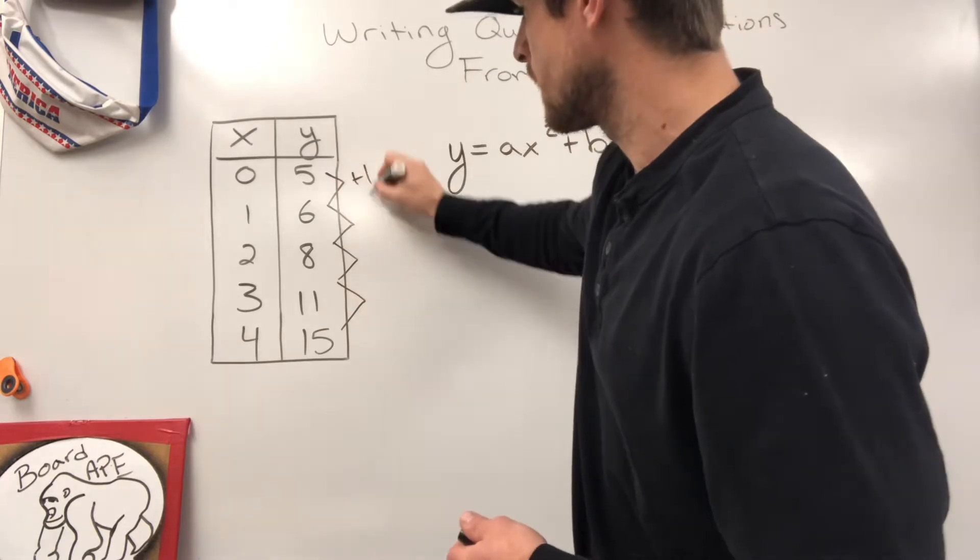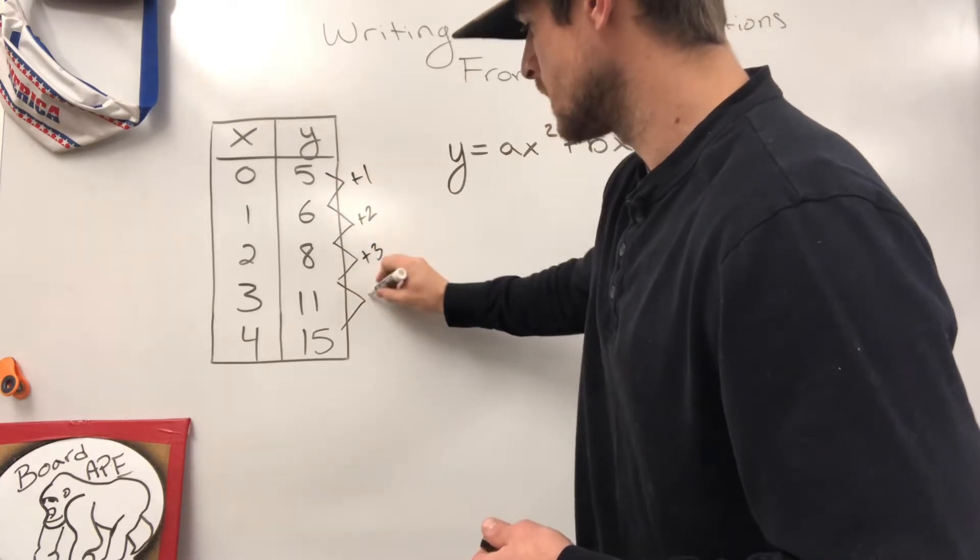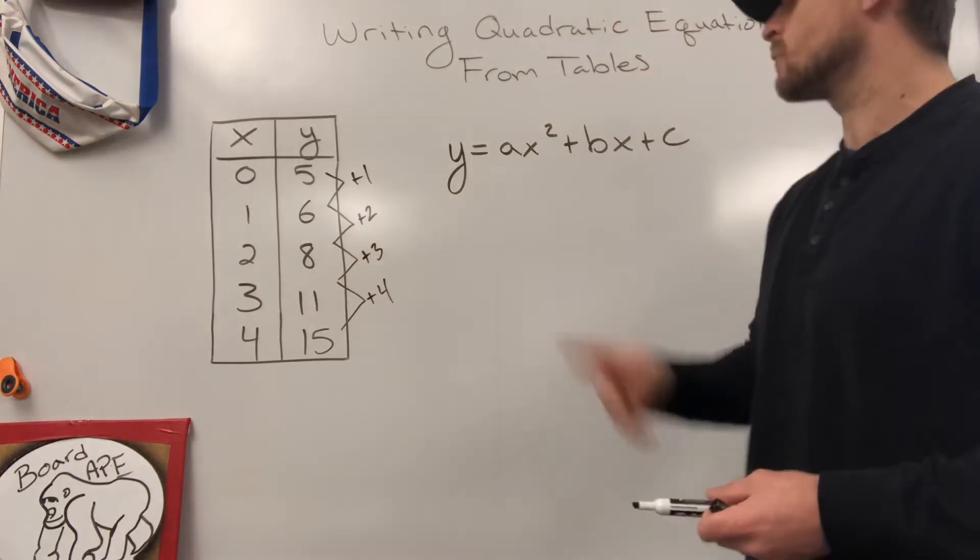We're going up one, up two, up three, and up four. What we're dealing here with is a quadratic.